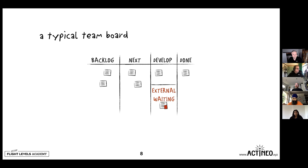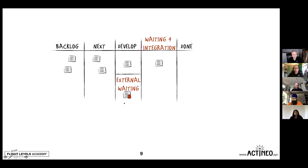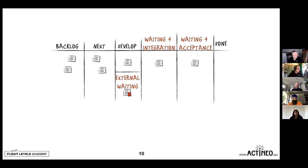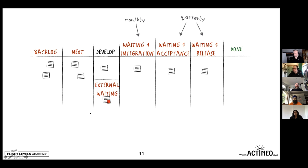What happens next? We may start realizing that work doesn't get from develop to done. Maybe there are things like waiting for integration, an acceptance process, or a big release process. Integration might have a monthly cadence; if you're not particularly efficient, you might have quarterly acceptance cycles and quarterly release cycles. The only column where work tends to happen is that develop column, while a lot of the others is just waiting, waiting, waiting.